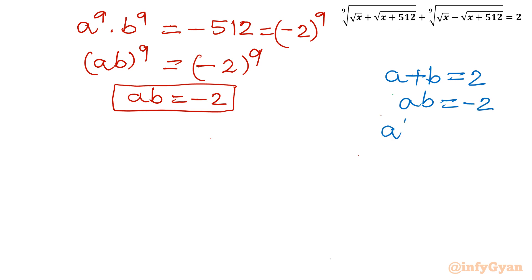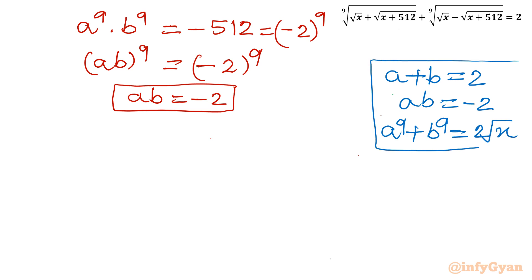Now we have the new system: a plus b equals 2 and ab equals minus 2. Our target is to calculate a⁹ plus b⁹, which we will then equate with 2√x to find the value of x.